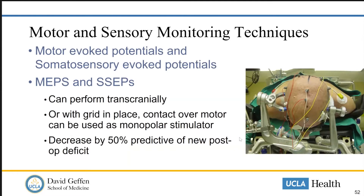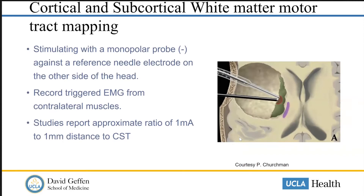Other real-time techniques can be used, like motor evoked potentials and sensory evoked potentials, and these can be done transcranially or with a grid in place. There is good data to suggest that these help predict postoperative deficit. Beyond that, we can do subcortical and cortical white matter motor tract mapping, which can also be done with the patient asleep. This is basically where we take a bipolar or monopolar probe and trigger a motor response by stimulating someplace in the brain, getting a readout from the distal muscle groups.